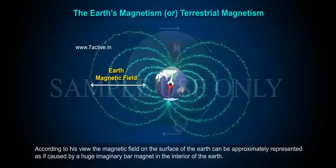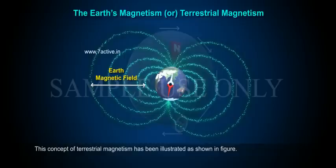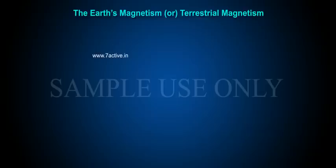According to his view, the magnetic field on the surface of the Earth can be approximately represented as if caused by a huge imaginary bar magnet in the interior of the Earth, but inclined to the geographic north and south axis of the Earth. This concept of terrestrial magnetism has been illustrated as shown in figure. The north end of the imaginary magnet has a south polarity, while the south end possesses the north polarity.